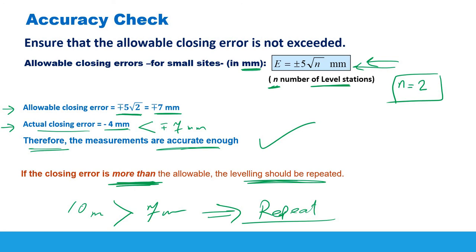So this is how to perform accuracy checks and calculation checks. In this session we covered how to use the height of collimation method to book measurements and do the calculations, then how to verify those calculations, and then how to check the accuracy of your readings by comparing the actual closing error against the allowable closing error using the relation ±5√n for this type of project. Different projects may have different allowable closing error relations.